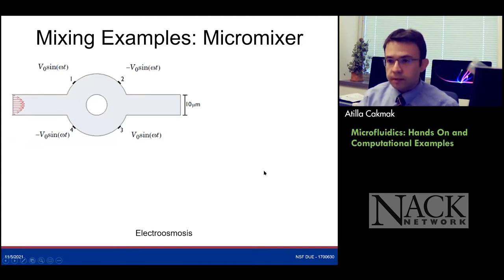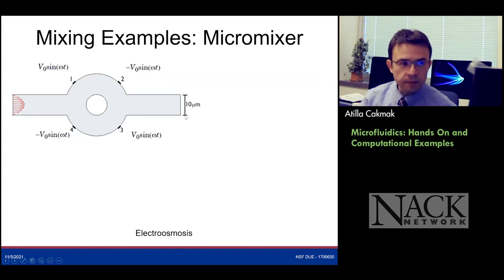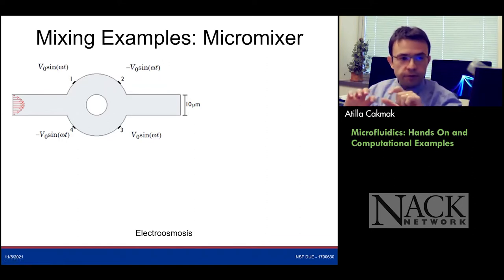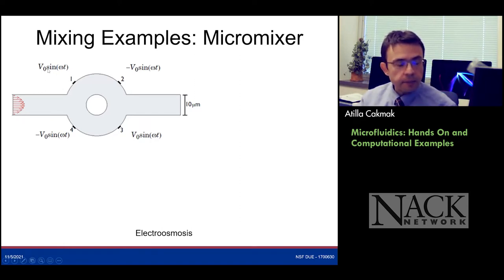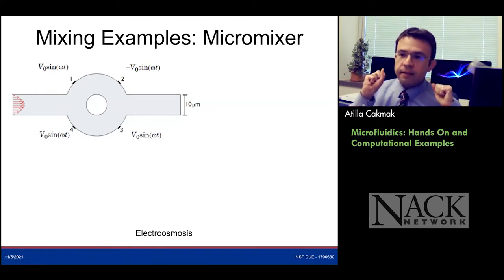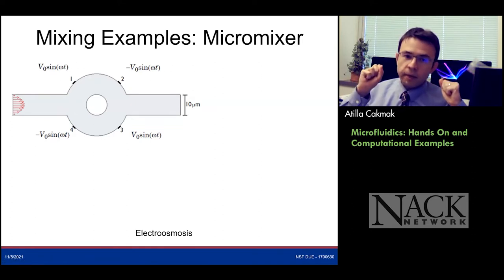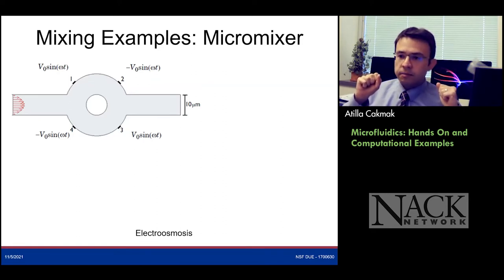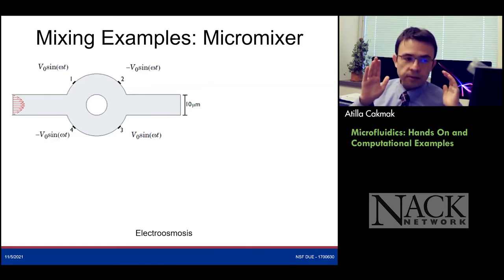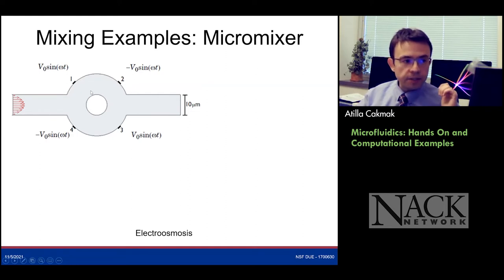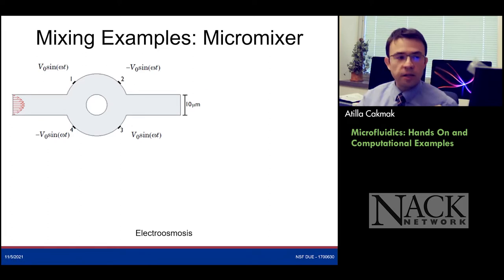Let's look at the electroosmosis situation. This is a 10-micrometer microfluidic channel. I'll flow in two fluids from one channel, and I've placed voltage supplies at four locations. Terry mentioned that at micron scales, these fluids will not mix. We have two helpers: one is the geometry, which helps mixing; the other is electroosmosis. Under the influence of alternating current external fields — the voltage supplies — with different polarities, the fluid will be influenced.